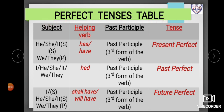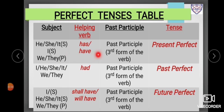Now let us start with the perfect tenses table. For subjects he, she, and it — these are singular number forms — we always use the helping verb 'has'. When 'I' is used as a subject, we use 'have'. When 'we' and 'they' are used as subjects, we also use 'have'. So to get present perfect tense, we add the helping verbs 'has' or 'have' before the past participle, or the third form of the verb.